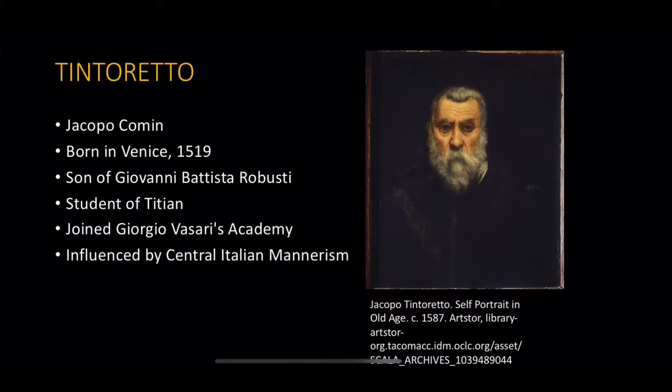Tintoretto was known as a great Venetian artist from the Venetian school. He was different than other Venetian artists of the 16th century, such as Titian. Although Tintoretto practiced as an independent painter, he gained a master. The Italian painter Titian was Tintoretto's master for a short time because Titian ejected or expelled Tintoretto from his workshop. Later on, Tintoretto joined Giorgio Vasari's Academia del Disegno. Even there, his works were criticized by Vasari and other artists. Vasari opined he worked in a fashion of his own and contrary to the use of other painters.